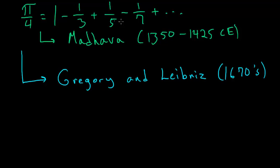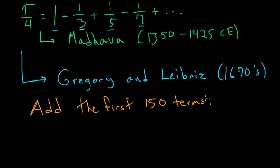If you actually wanted to use this series to find any digits of pi, you would have to add up a huge amount of these terms. If we add the first 150 terms, we get as an approximation of pi that it's about 3.1349. Even with these 150 terms, we still only have two decimal places of accuracy.